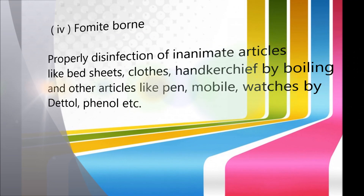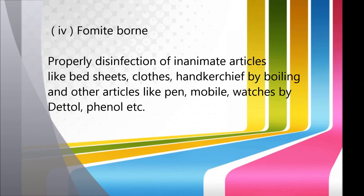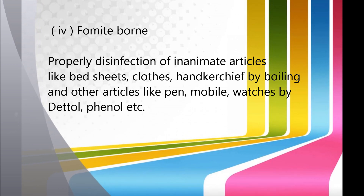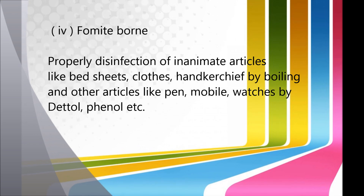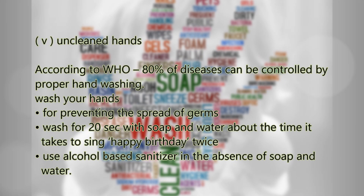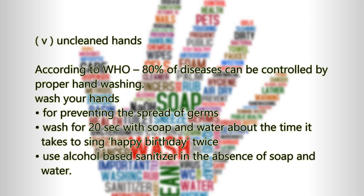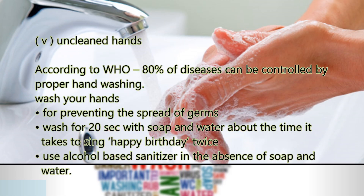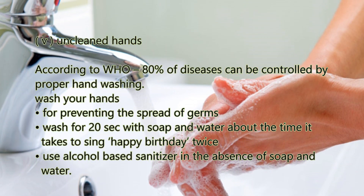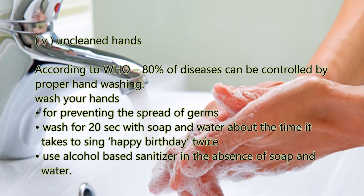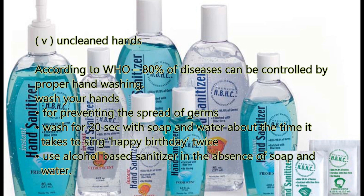Fomite-borne: We do proper disinfection of inanimate articles like bedsheets, clothes, and handkerchiefs by boiling, and other articles like pens, mobiles, and watches by Dettol and phenol, etc. Unclean hands: According to WHO, 80% of diseases can be controlled by proper hand washing. Hands should be washed for at least 20 seconds with soap and water — about the time it takes to sing 'Happy Birthday' twice. Alcohol-based sanitizers should be used in the absence of soap and water.